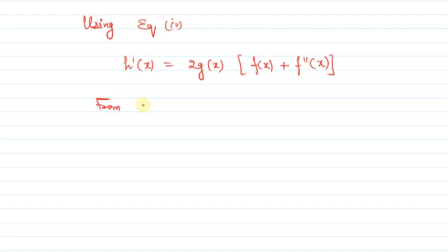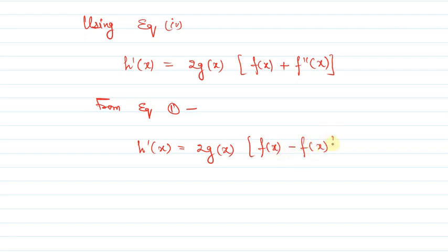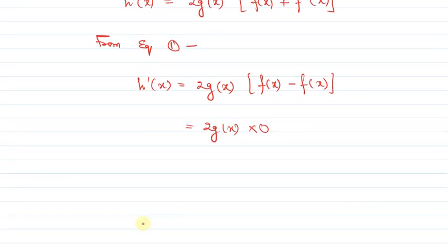From equation 1, h'(x) = 2g(x)·f(x) + 2f(x)·(-f(x)) = 2g(x)·f(x) - 2f(x)² ... wait, simplifying: h'(x) = 2f(x)·g(x) - 2f(x)·g(x) = 0. So h'(x) = 0, meaning h(x) is a constant.